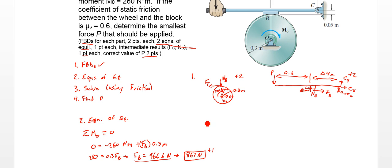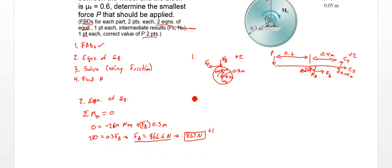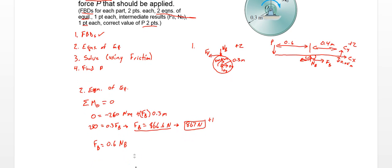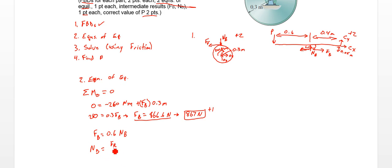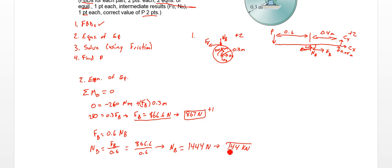We can use that in our frictional equation. The coefficient of friction from the problem description is 0.6, so FB equals 0.6 times NB. Therefore NB equals FB divided by 0.6, which equals 866.6 over 0.6. So NB equals 1444 newtons, or approximately 1.44 kilonewtons. We get plus one point there. We're on our way to finding P.